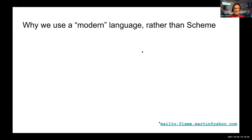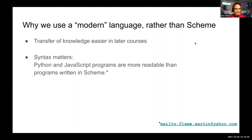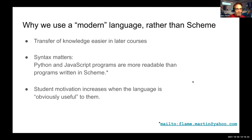Why do we want to use a modern language such as JavaScript or Python, rather than the original language Scheme? We think that the transfer of knowledge is easier when the language is similar in syntax to languages students will use in later courses, and syntax matters. Python and JavaScript programs are more readable than programs written in Scheme, by and large. Students' motivation also increases when the language is obviously useful to them — students are looking for internships and want something that makes sense to employers on their CV.